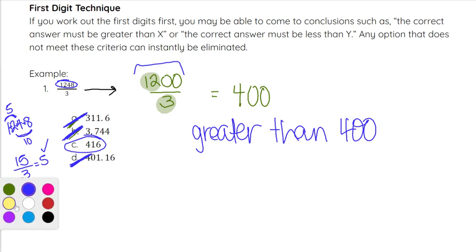Again, as always, you can actually solve the problem. You can set up your long division and do 1,248 divided by 3 and go through that process. But you can look at this and help eliminate choices without having to calculate, and that can save you time as well.